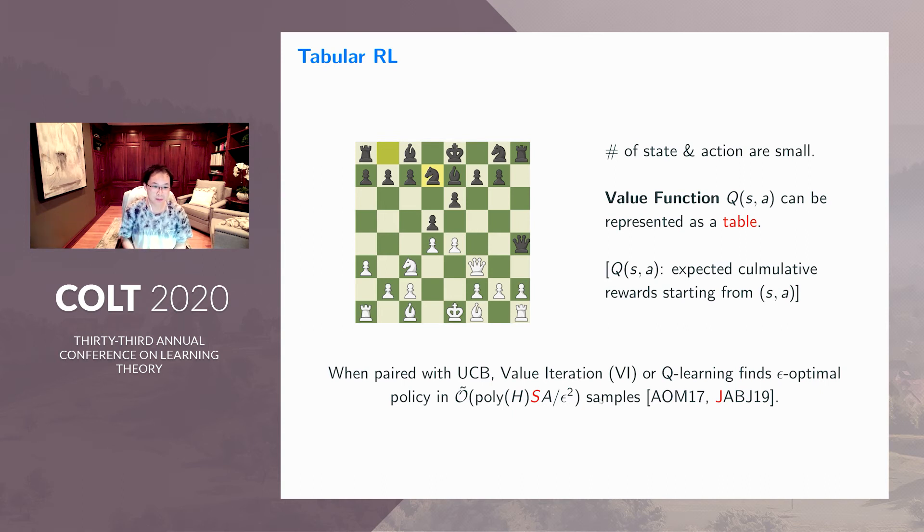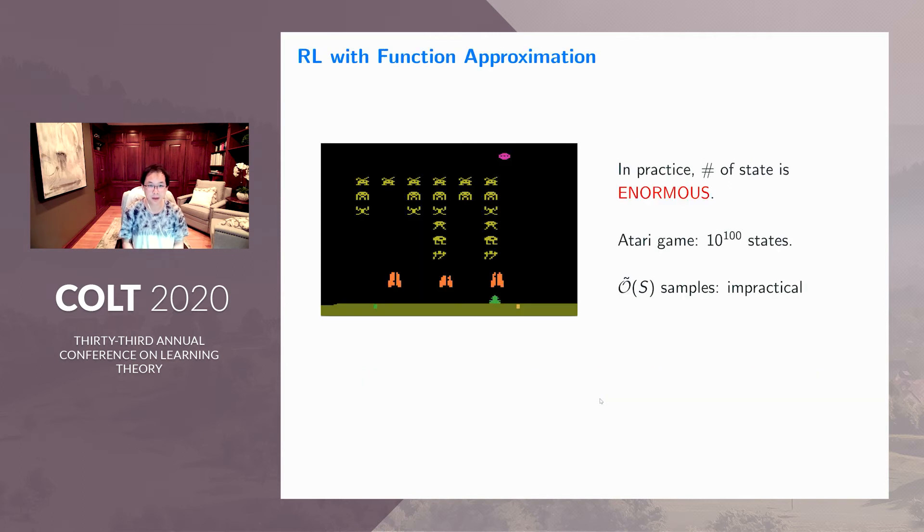In tabular reinforcement learning, when paired with good exploration strategies like upper confidence bound, classical algorithms like value iteration or Q-learning find the epsilon-optimal policy rather efficiently. Typically, they only need O(H³SA/ε²) samples, where H is the length of each game, S is the number of states, A is the number of actions, and epsilon is the accuracy of the optimal policy. Most importantly, the sample complexity scales linearly in terms of S, and the computational complexity is more or less the same as the number of samples.